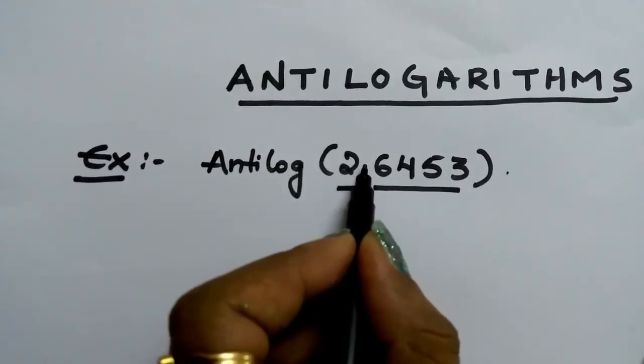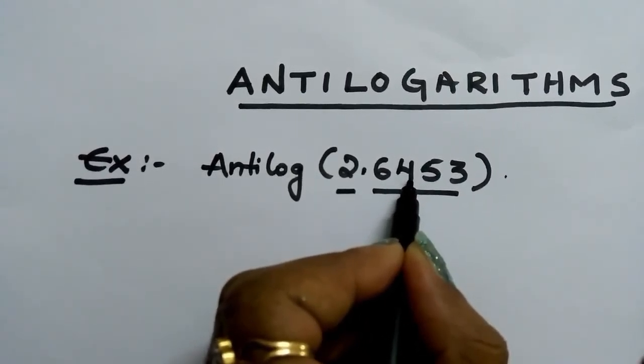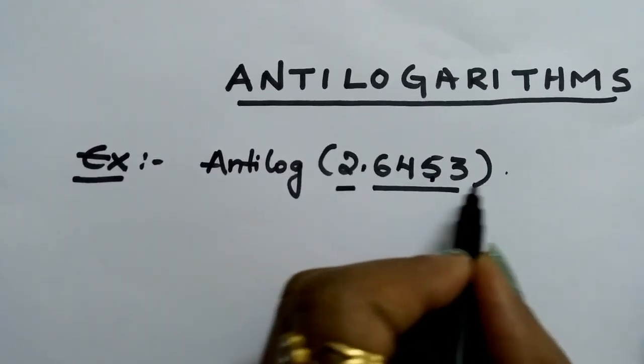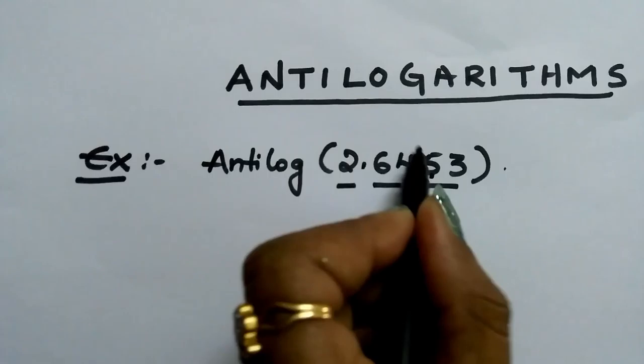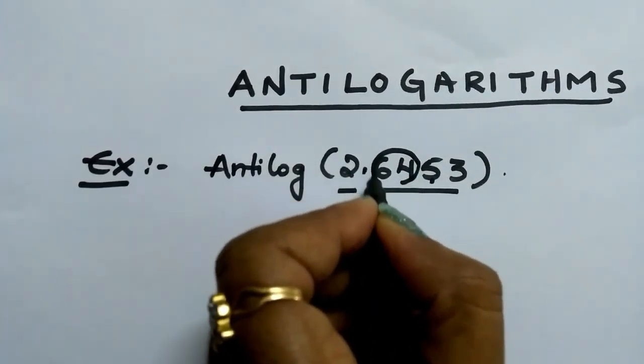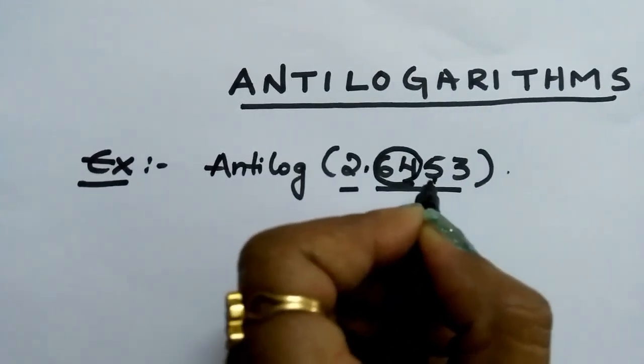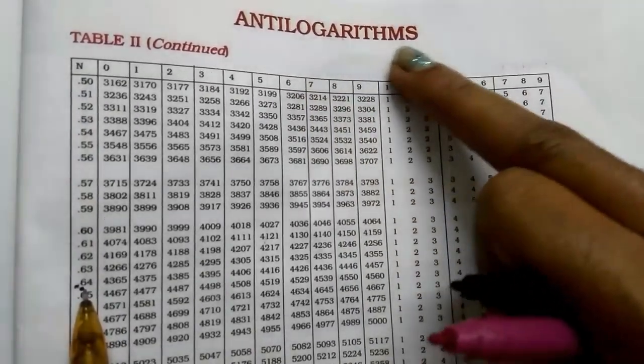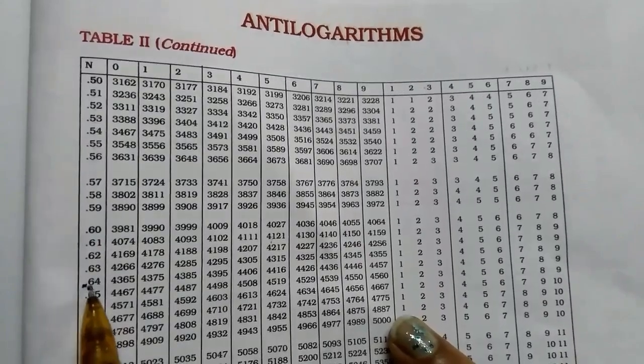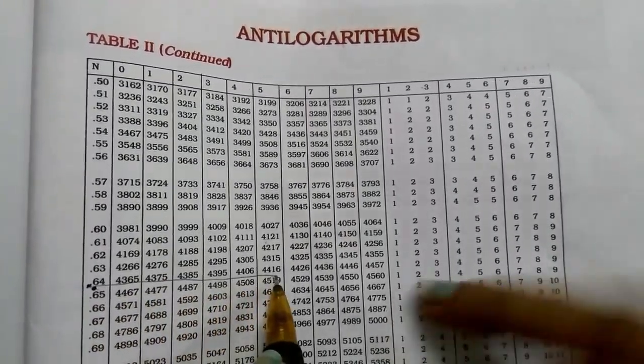See 0.64 under 5. By using the antilog book, see 0.64 first, 0.64 under 5. This is 0.64. This is the antilogarithms book. 0.64 under 5, this is 5.